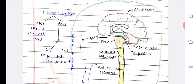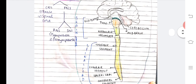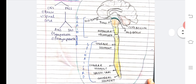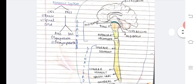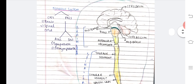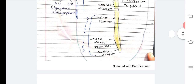Here is the diagram of our nervous system. The central nervous system includes the brain and spinal cord. The brain has parts like cerebrum, midbrain, pons, medulla oblongata, and cerebellum. The spinal cord has the thoracic segment, lumbar segment, sacral segment, and coccygeal segment.